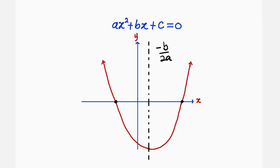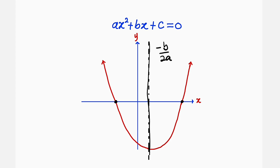Once you take the coefficient of x, multiply it by negative 1, and divide by 2 multiplied by the leading coefficient, it will give us exactly the value of x at this point.